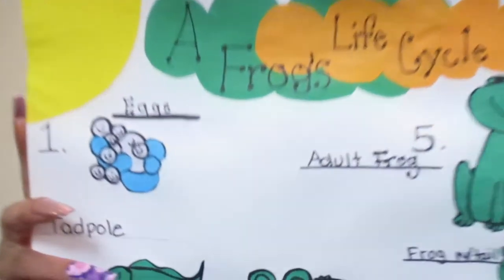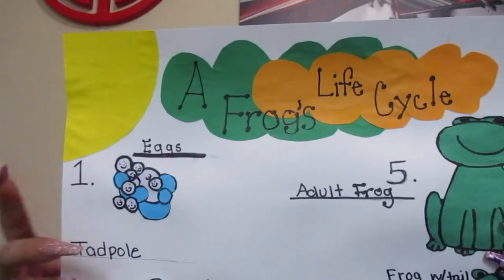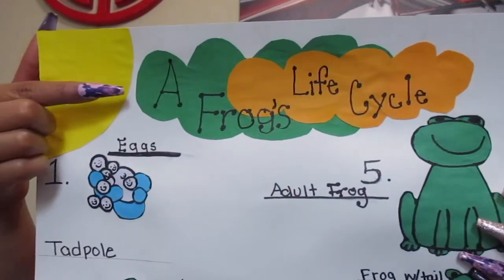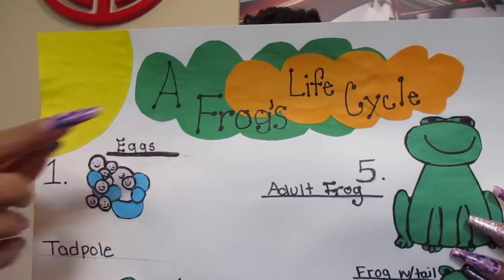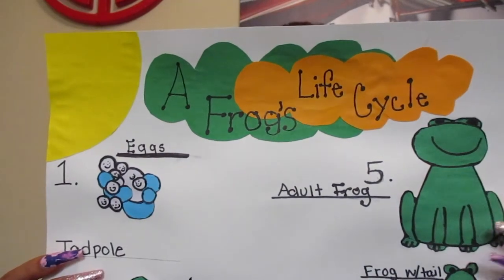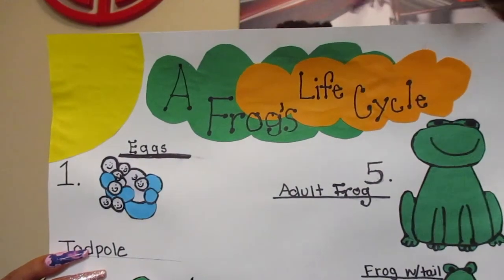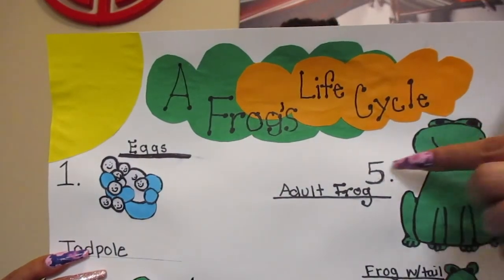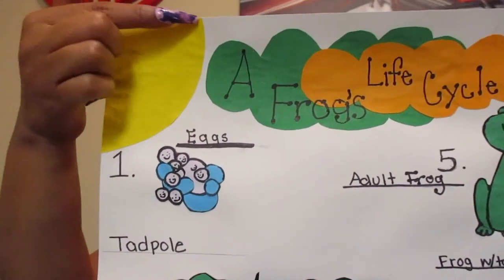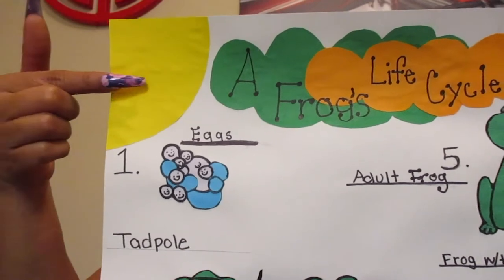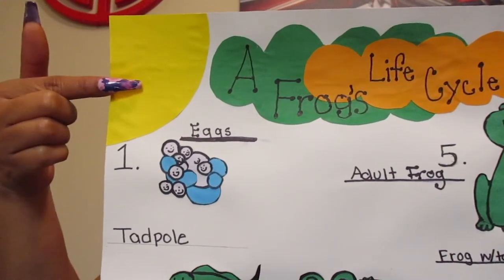Now let's begin. As always, create a very creative title for whatever project, assignment, or report that you do — you will always have to create a title. The next thing I did is I used some construction paper to create the sun; you may do this by drawing your sun.